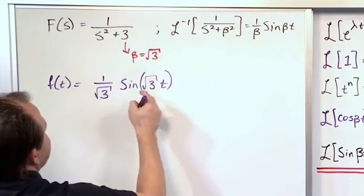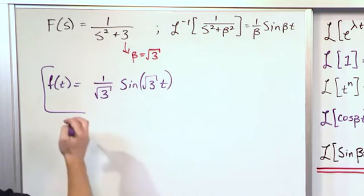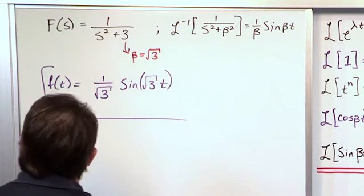And you can put some parentheses here to show that that's all inside of there. And this is the answer, 1 over square root of 3, sine of square root of 3 times t. Again, we're just comparing it to what we see over there and going accordingly.